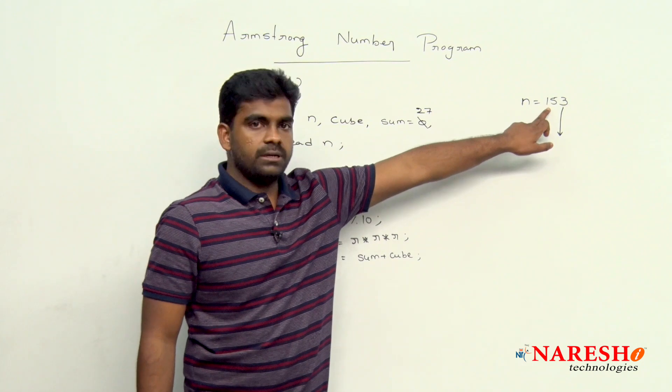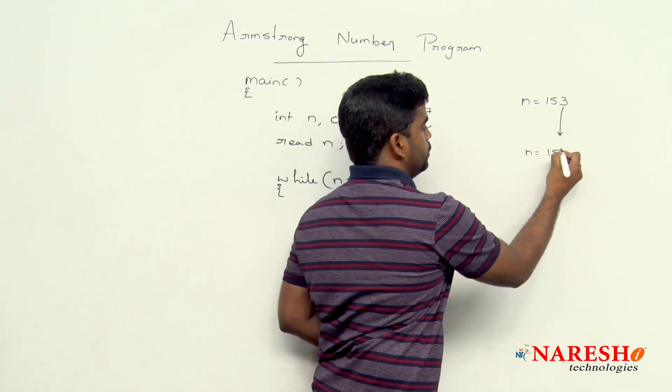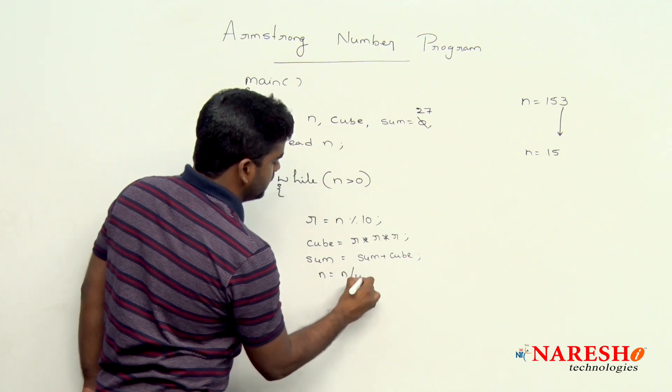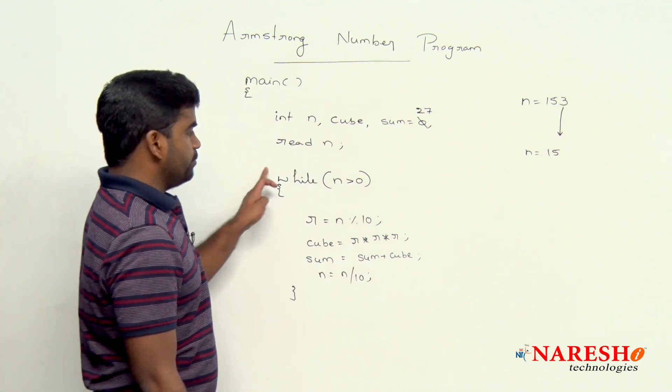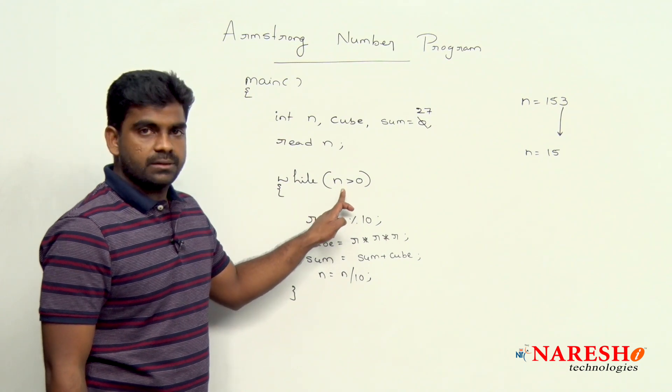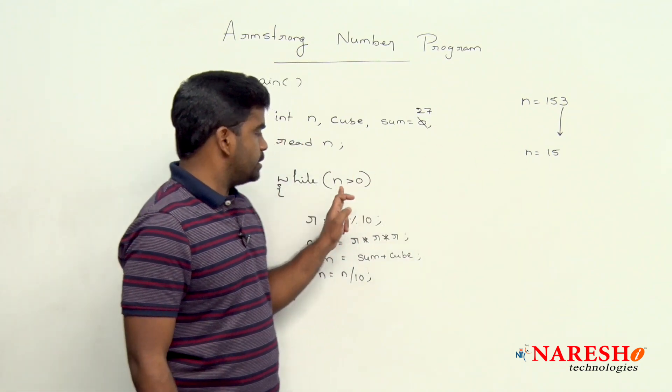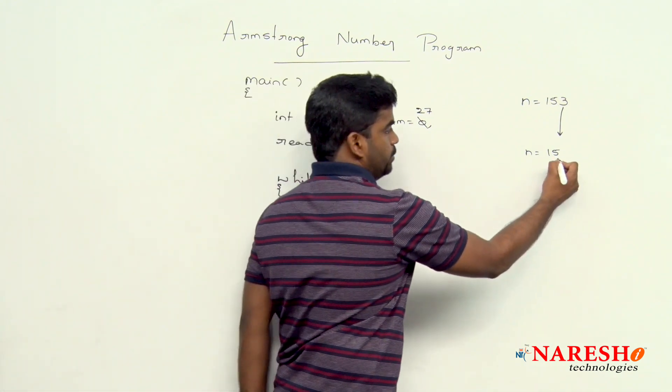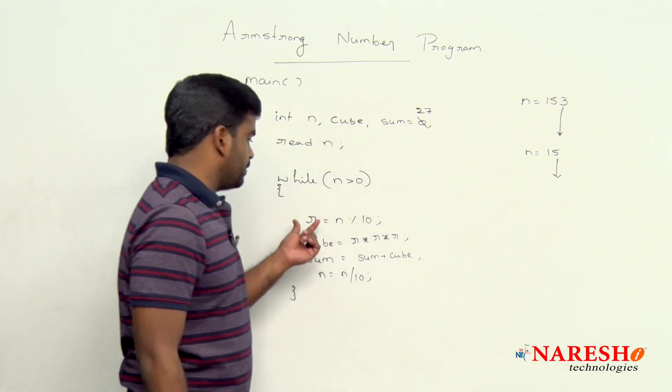After working with this one, n value I just want to change it to 15. How? n equal to n by 10, n value become 15. Again the same loop will repeat. 15 is greater than 0, condition true, come inside. N mod 10 will give that value 5, r value 5.